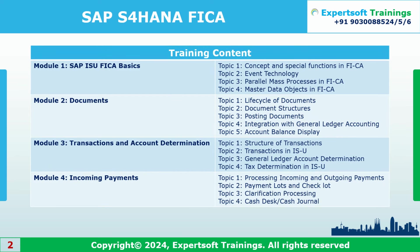In the third chapter we are going to see what are the transactions we have in ISU — what are the main and sub transactions, how to configure those, how the combination of these two determines the type of posting, GL account determinations, and document types.